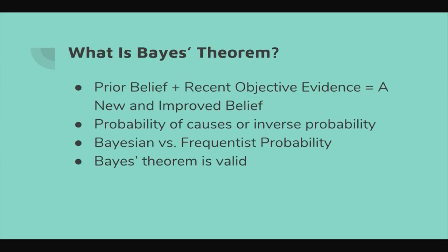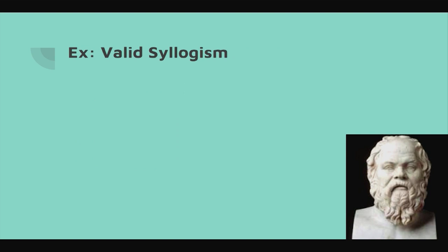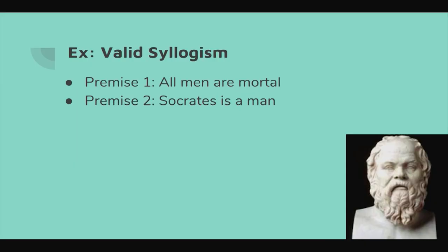Bayes' theorem is valid in a philosophical sense — like a valid syllogism. For example: premise one, all men are mortal; premise two, Socrates is a man; therefore Socrates is mortal. Since Socrates is a man and all men are mortal, he's a subset of that group, so the conclusion follows. Bayes' theorem works similarly — you plug numbers into the equation and get a conclusion. The premises need to be sound, and then the result also follows.